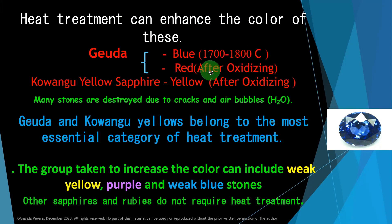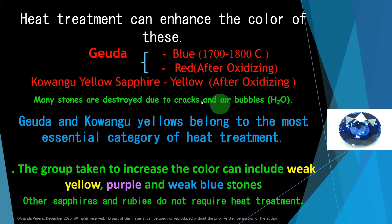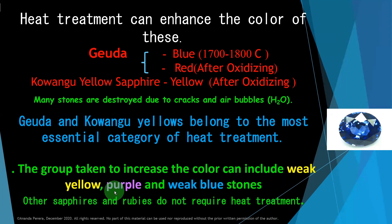If a red geuda is present, after oxidizing it becomes yellow. Oxidizing means mixing with oxygen. Many stones are destroyed due to cracks and air bubbles, especially H₂O bubbles. The geuda group taken to increase color can include weak yellow, purple, and weak blue stones. Other sapphires and rubies do not require heat treatment.